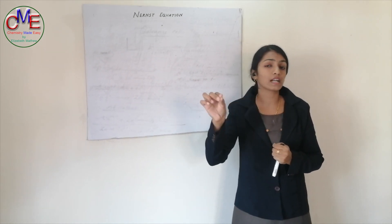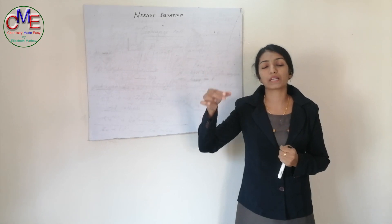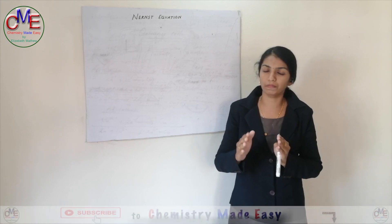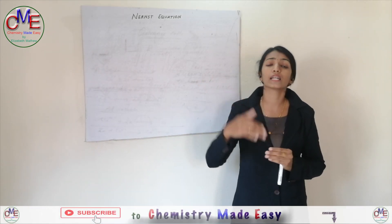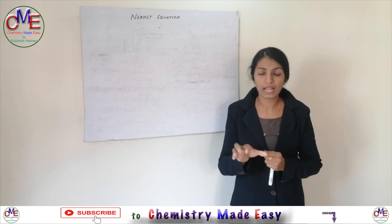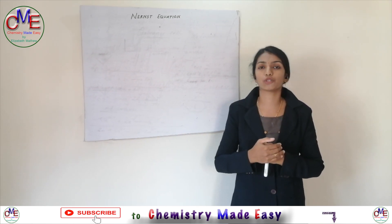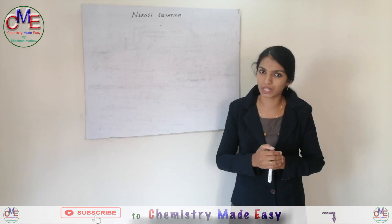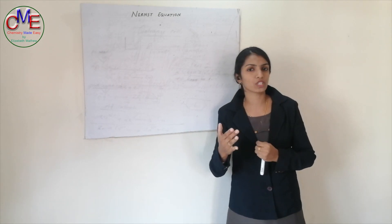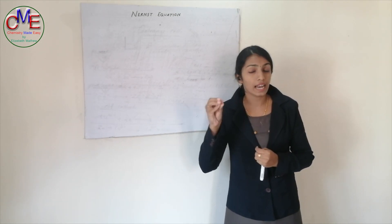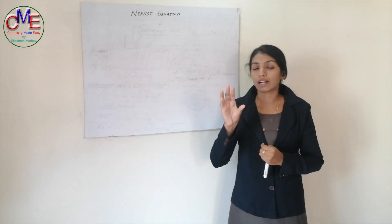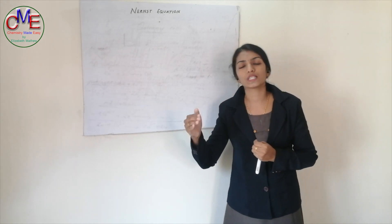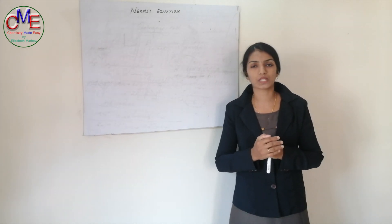When we consider a metal/metal ion electrode — that is, when an electrode is dipped in its own solution — the potential value of that electrode depends upon the concentration of the electrolyte used. Nernst gave a relationship between the potential of the electrode and the concentration of the electrolyte solution, and that equation is known as the Nernst equation.